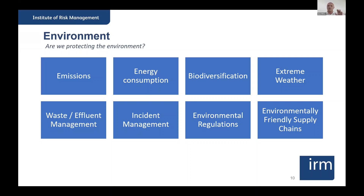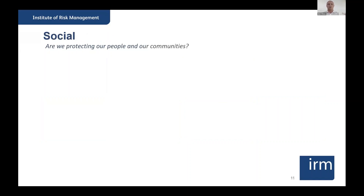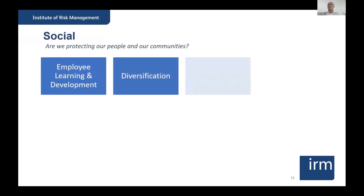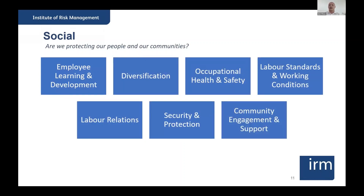Those are the eight high-level environmental considerations. Now moving on to social: are we protecting our people and communities? What are the seven or eight key risks? Community engagement and support is effectively what CSR was all about until a couple of years ago. But ESG has evolved so much more — not just thinking about community engagement, but all these other components as well.